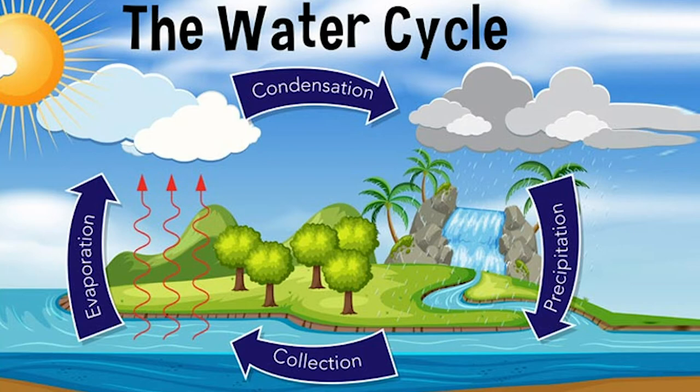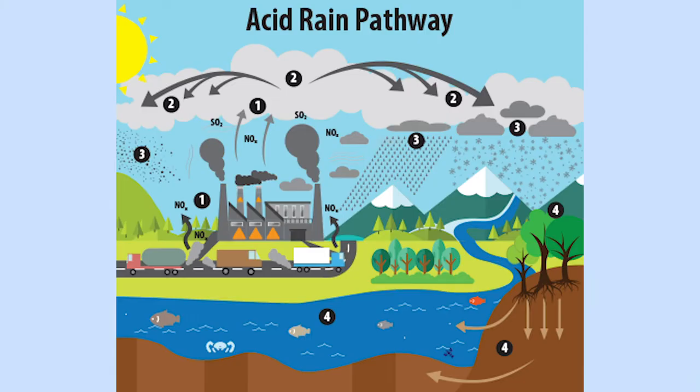But what happens when the water cycle is interrupted by harmful chemicals or gases? Fossil fuels used in cars, factories, and more produce carbon emissions of nitrogen and sulfur into the air, where these pollutants are transformed into acid particles. These acid particles get caught in between the clouds formed during condensation and fall to the earth during precipitation.